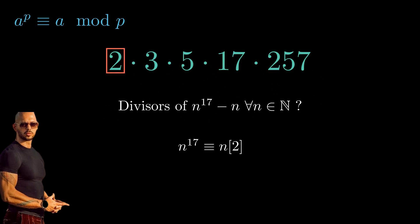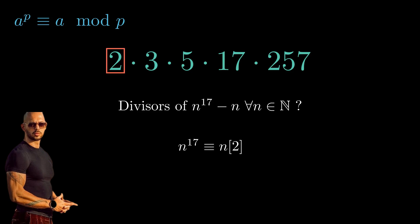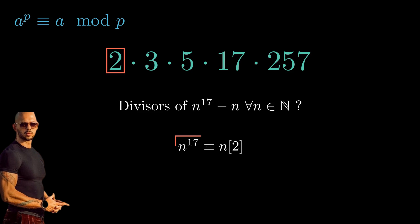Now let's talk modulos. Modulo 2 is about checking if our integer is odd or even. Since both terms n raised to the power 17 and n are either odd or even at the same time, it means that 2 divides n to the 17 minus n.